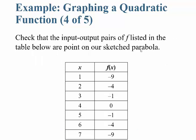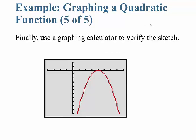You can check the input-output pairs listed in the table below, and the points do fall on the sketched parabola — so what we just did works. You can also use a graphing calculator to verify this, and you'll see the graph is indeed what we just got.